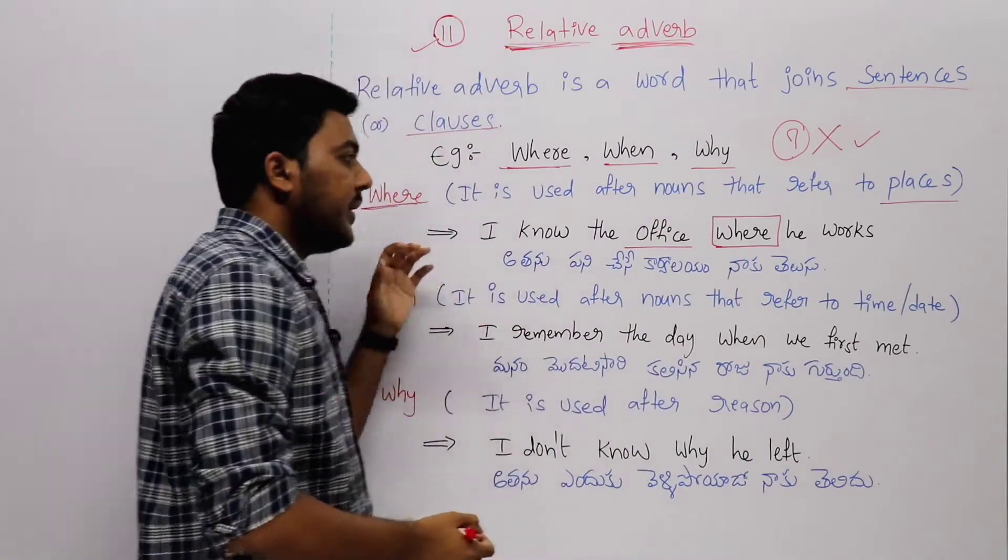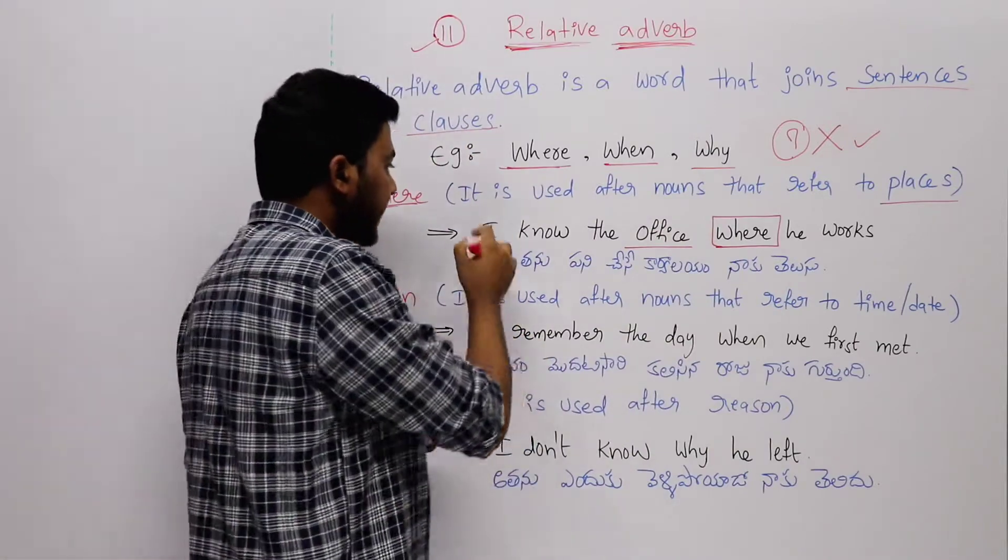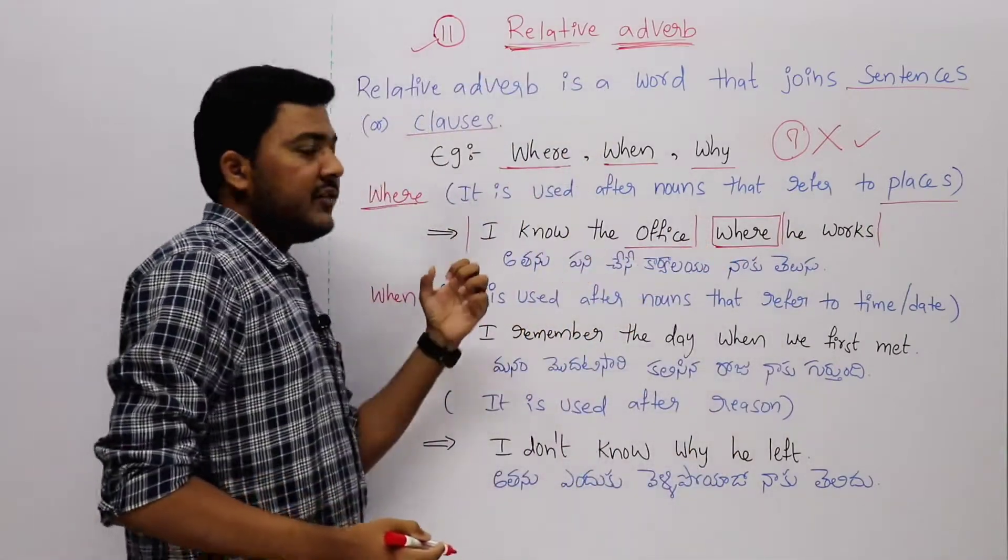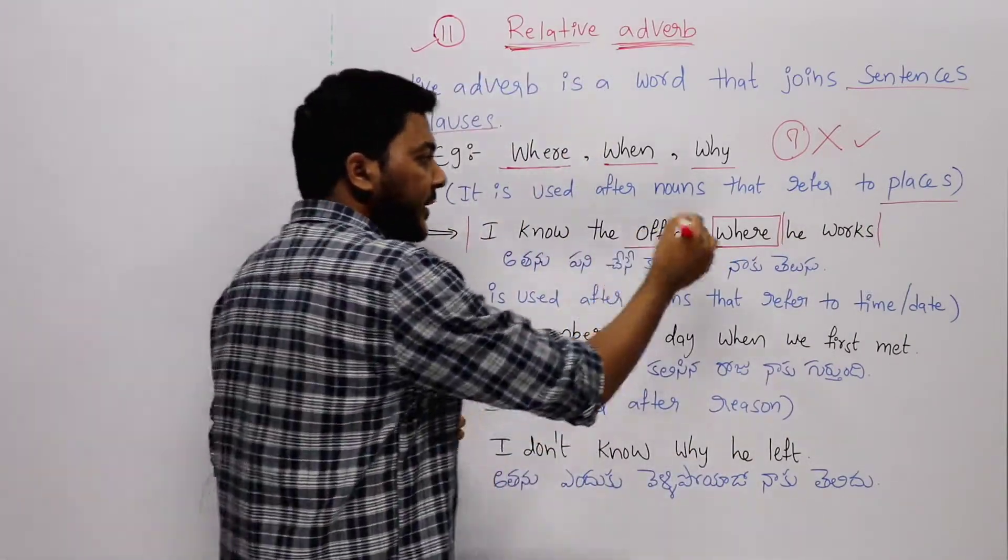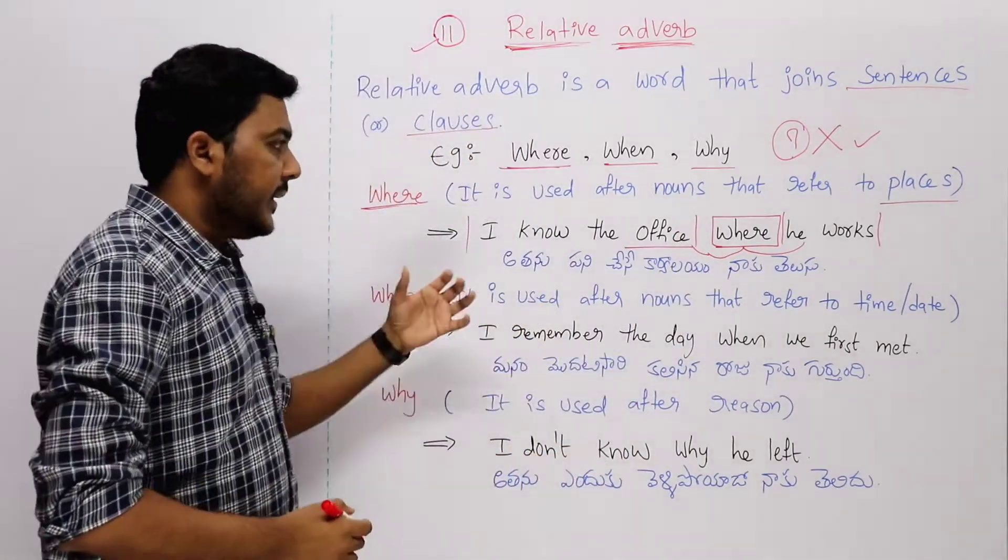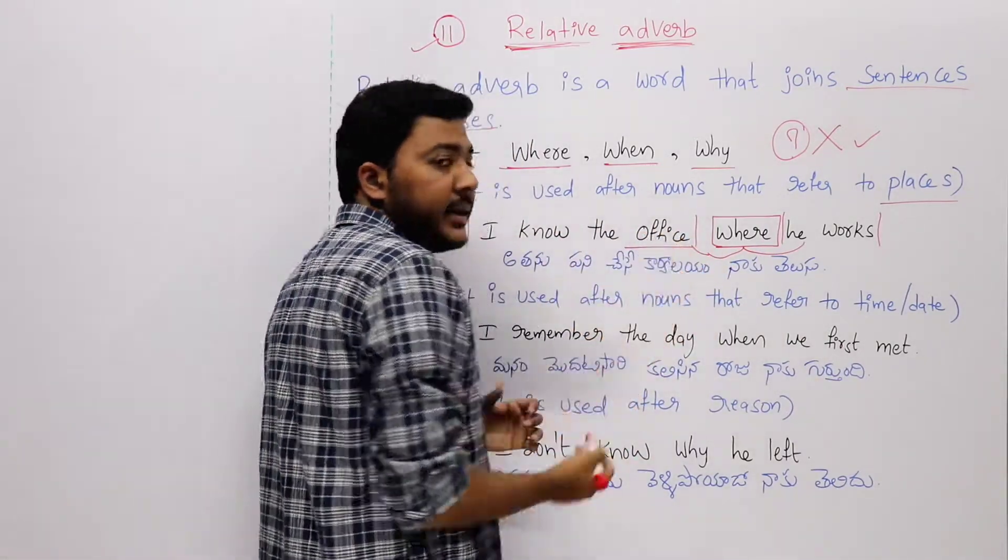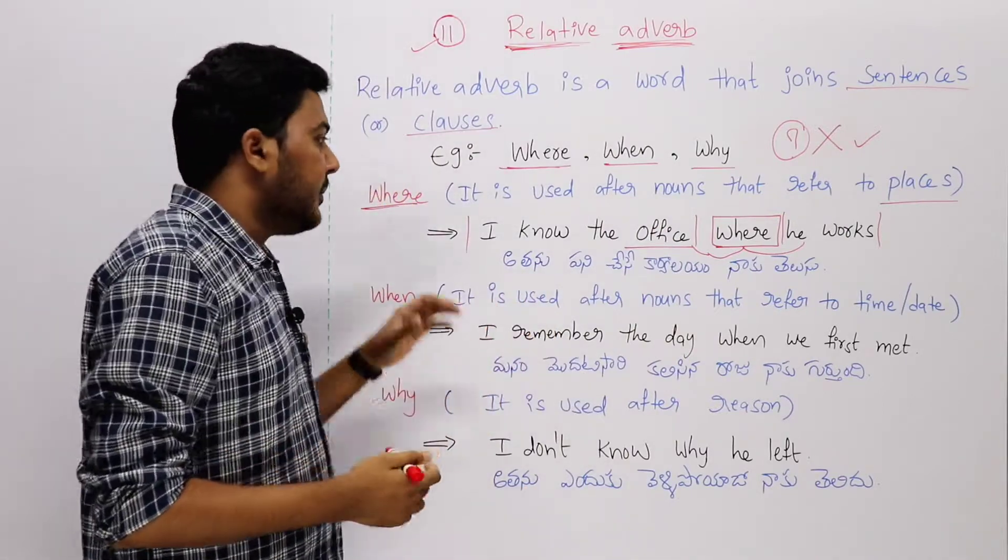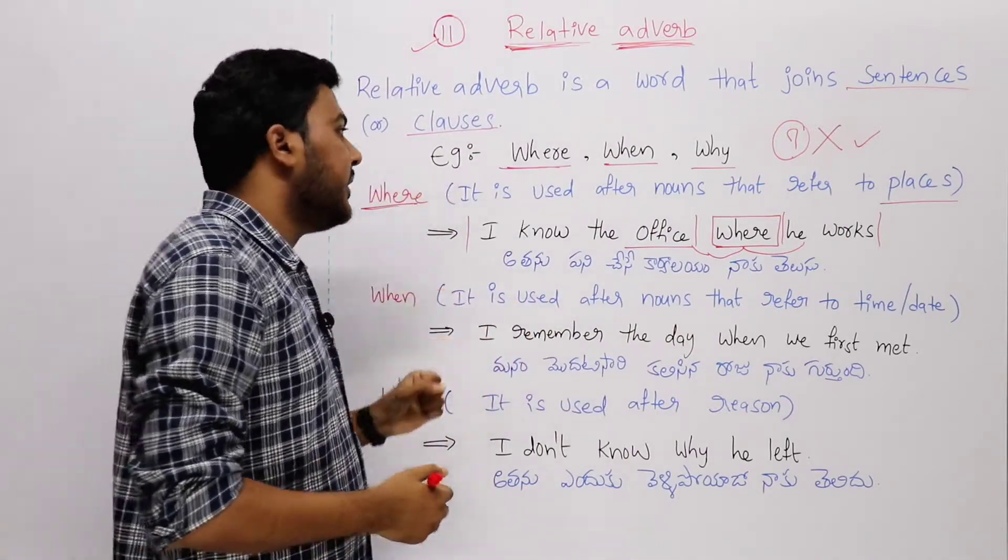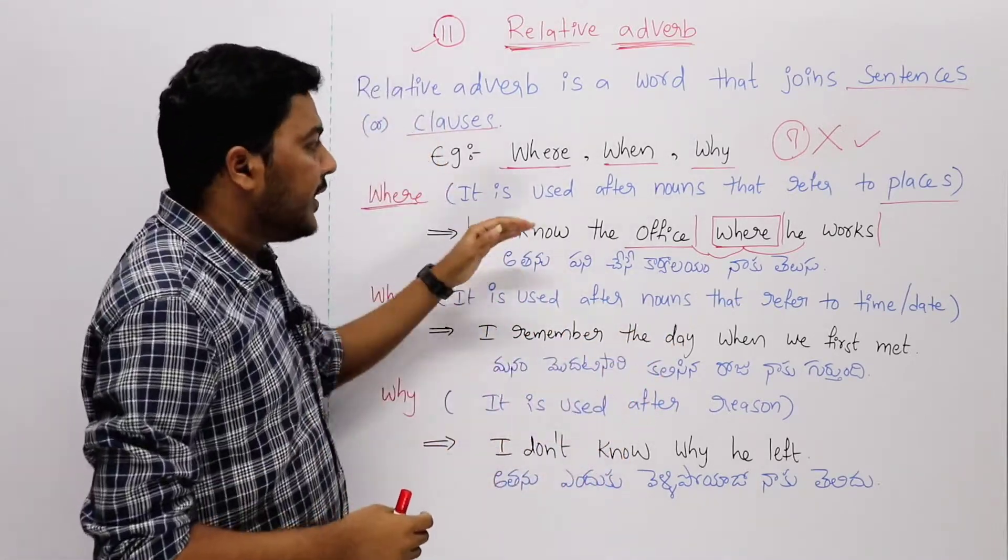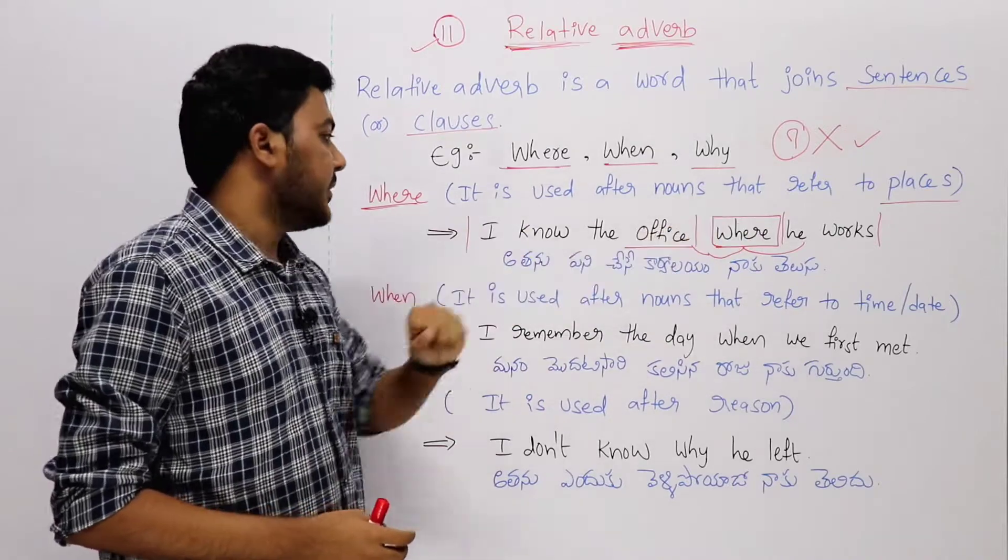Here, where connects the first part and second part. This relative adverb connects these two different clauses. Office is a place, so when we mention place-related things, we use this relative adverb to relate two different clauses. I know the office where he works.